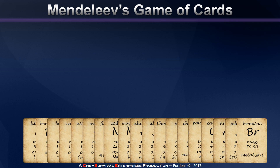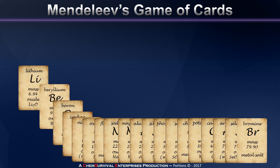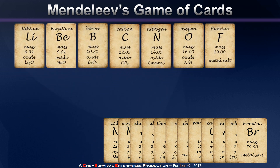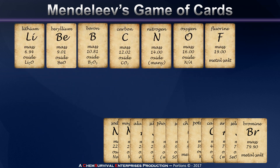Next we're going to line up our cards in order of increasing atomic mass — starting with lithium, beryllium, boron, carbon, nitrogen, oxygen, and fluorine, all in increasing order of atomic mass.